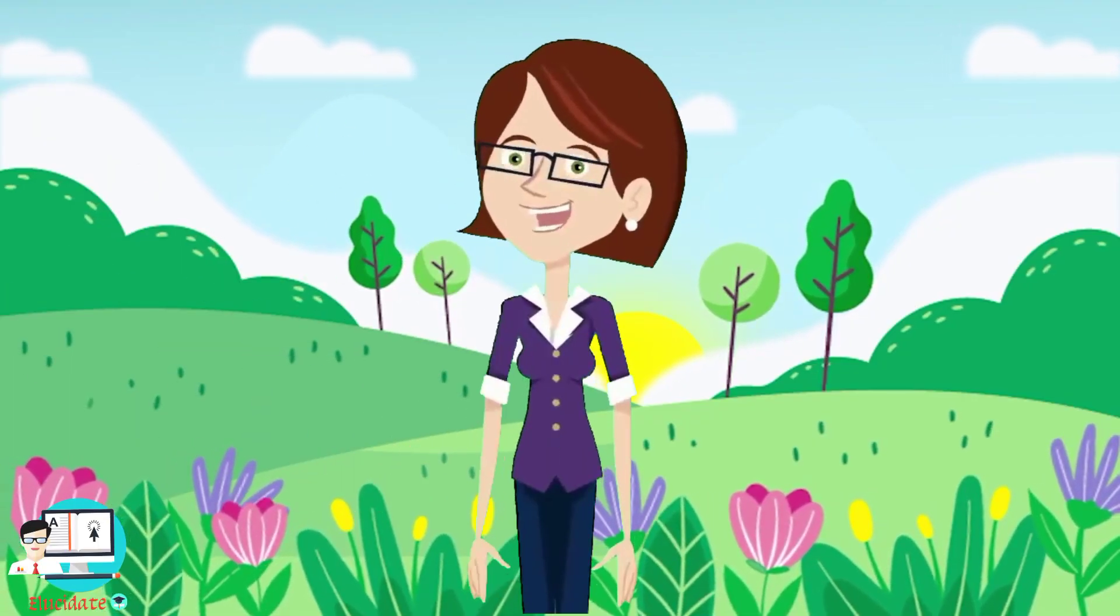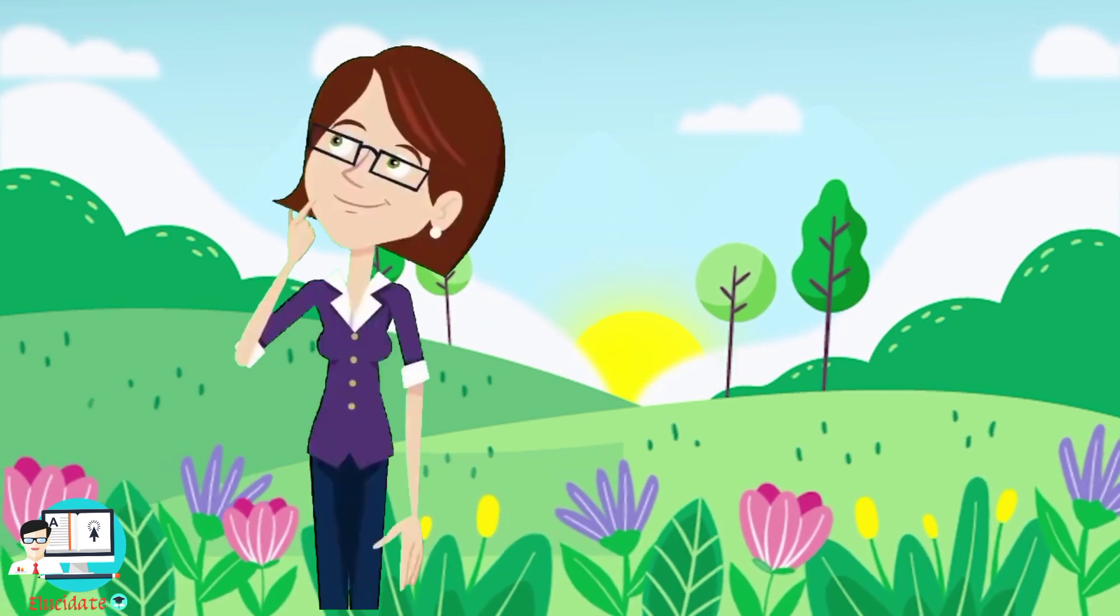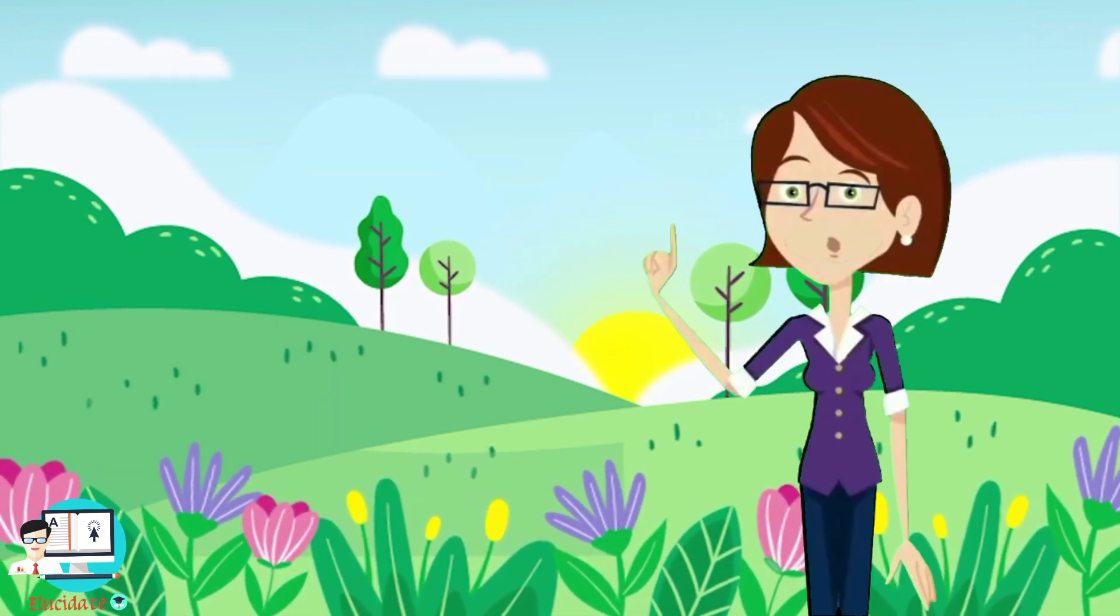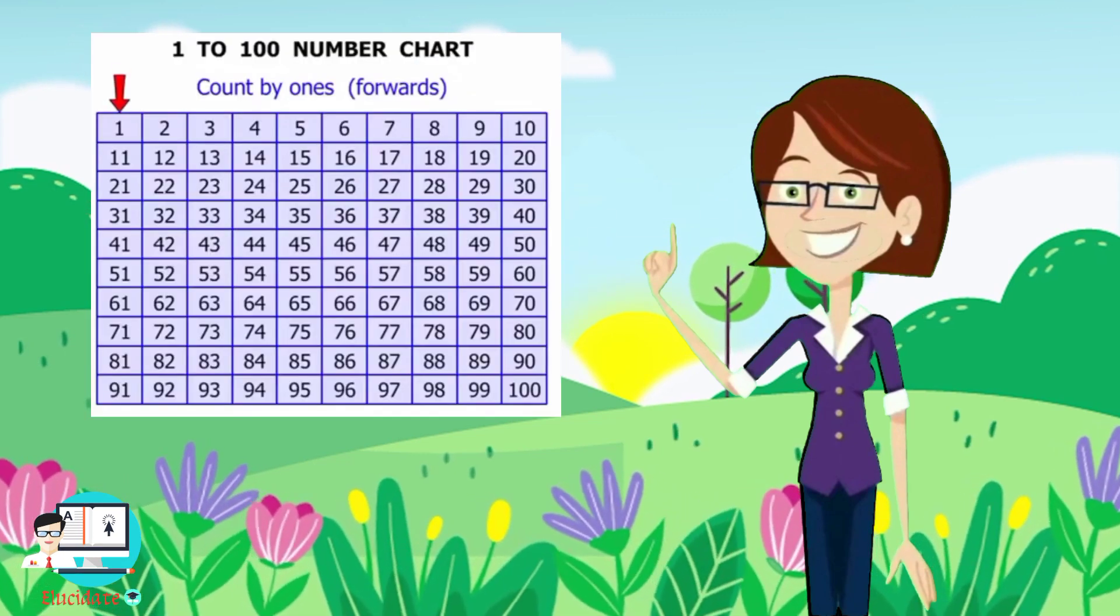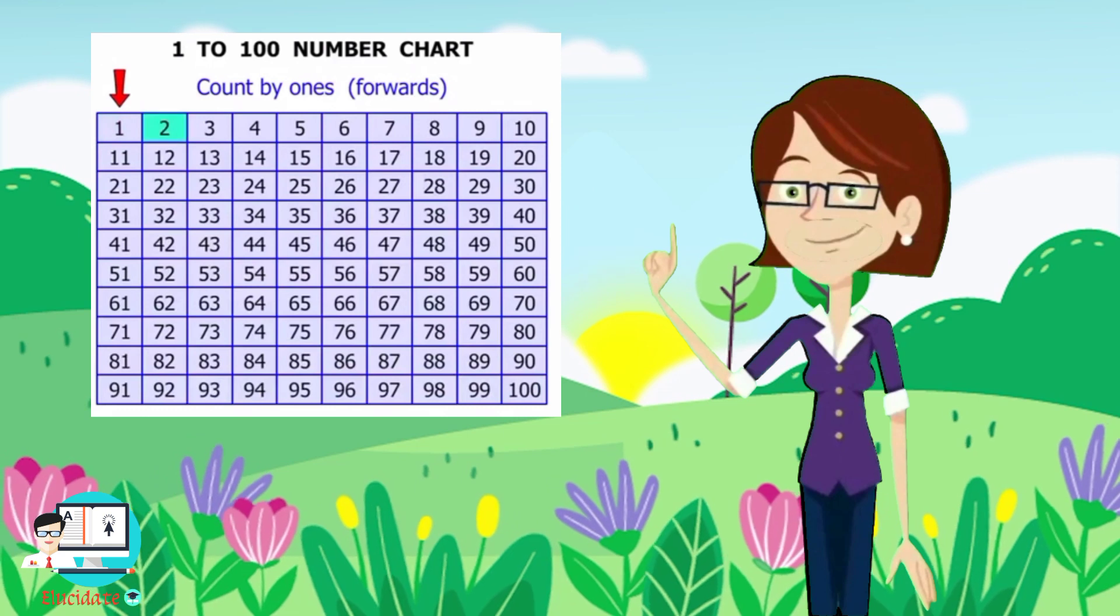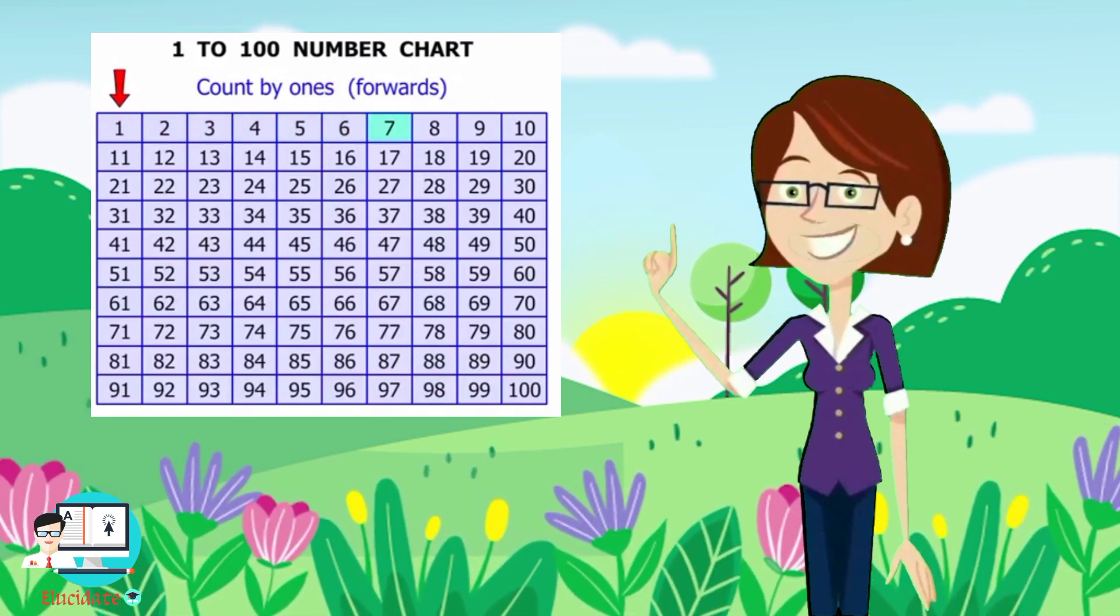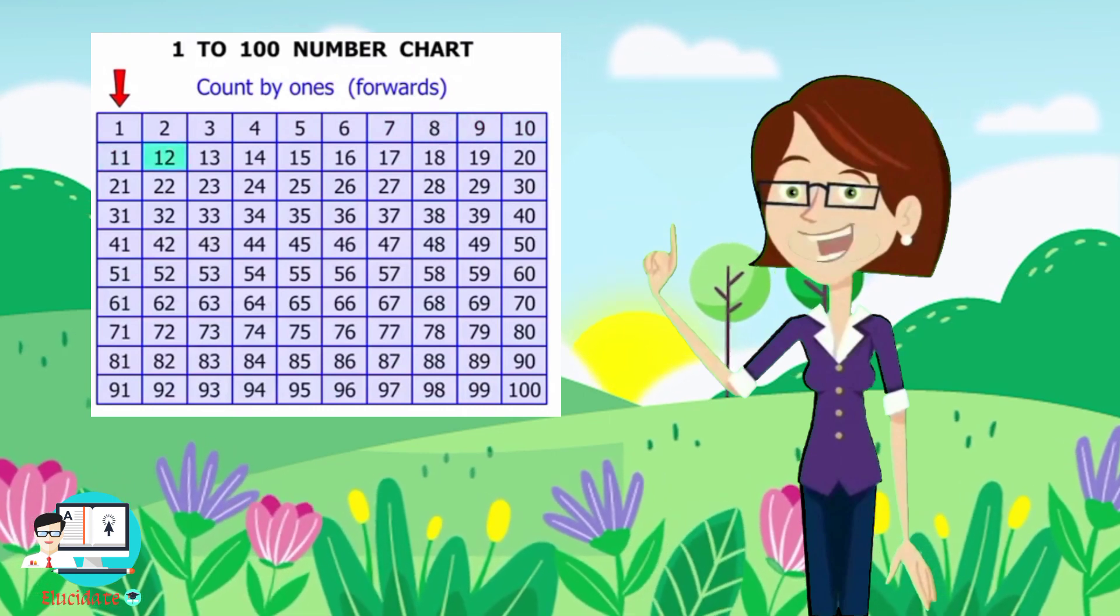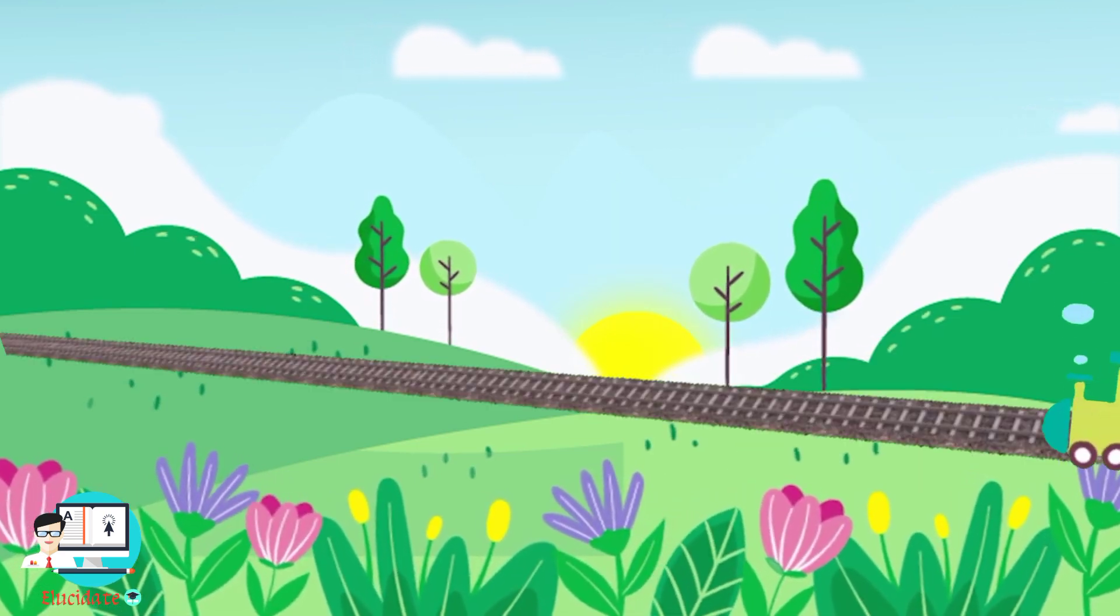Good morning everyone, hope you all are doing great. Today we are learning ascending order. For ascending order, we always need a number chart which starts from the lowest number one and goes up to the biggest number, just like a train. Here we have some examples which can explain what is ascending order.